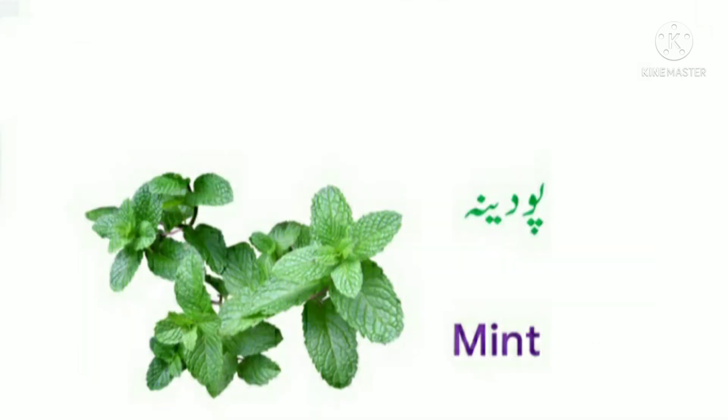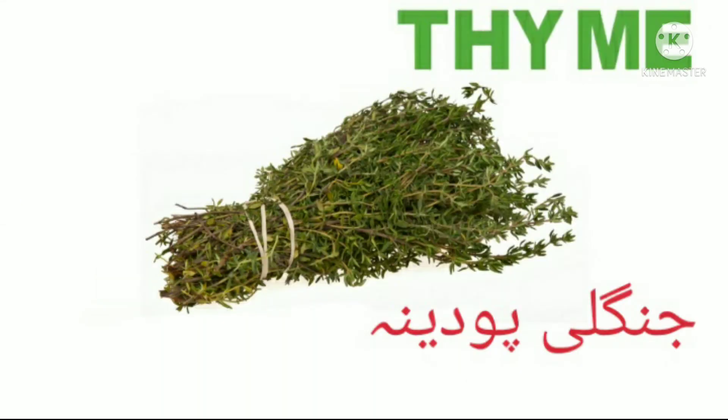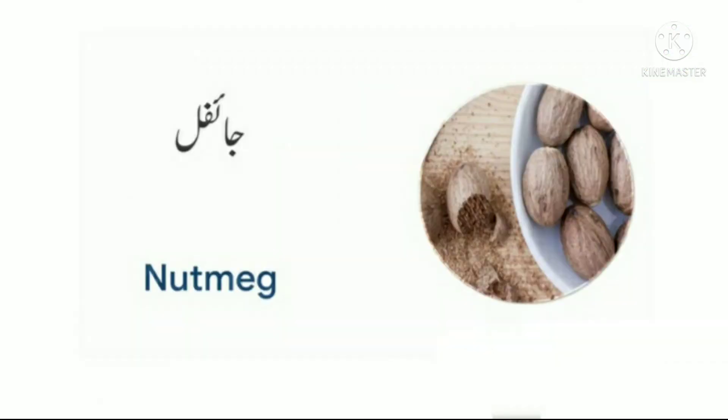Number thirty nine: mint, podina. Number forty: thyme, jangli podina. Number forty one: nutmeg, jaifal.